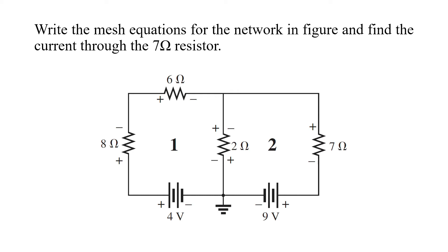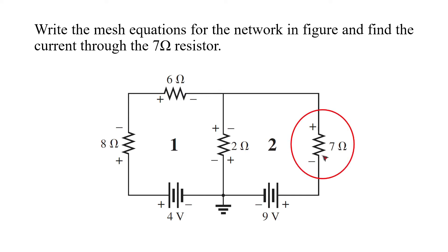Today we are going to look at Mesh Equations for a Network in the Figure and find the current through the 7 Ohm resistor. Based on our values, we have two loops throughout the entire equation. We have two equal currents, and the 6 Ohm resistor current is considered at the same time.